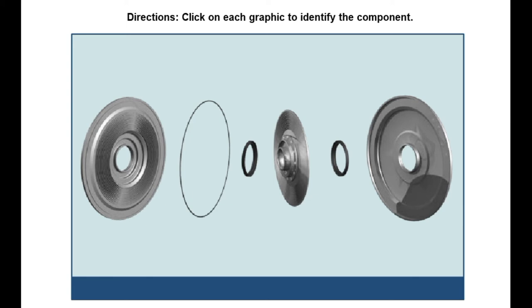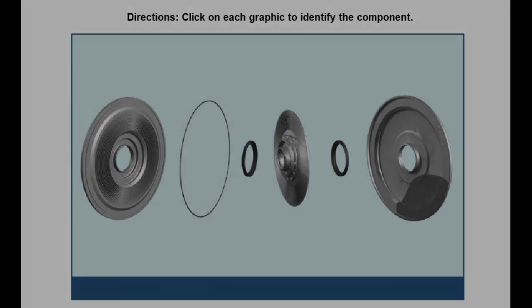When the viscous clutch is applied, the silicon fluid forces the turbine to rotate close to the same speed as the converter cover. With viscous supply, there is still a minimal amount of slippage between the rotor and the body — about 40 RPM at 97 km/h, or 60 mph.